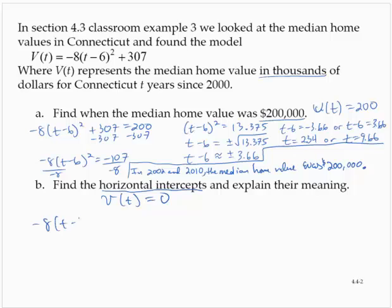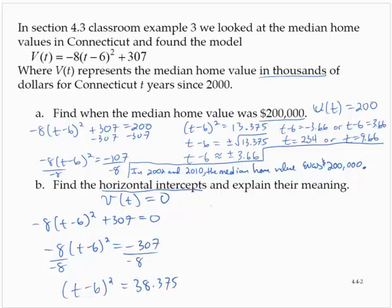So -8(t-6)² + 307 is equal to 0. As before, let me subtract the 307 and divide by -8. So t-6 squared is equal to 38.375. Square root property: t-6 is positive or negative square root of 38.375.